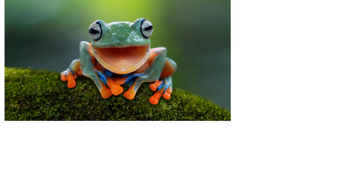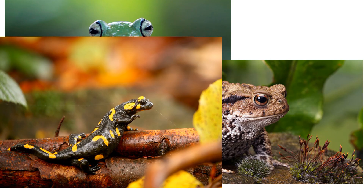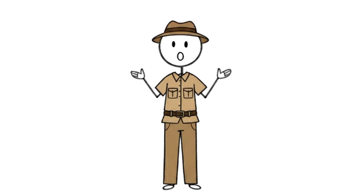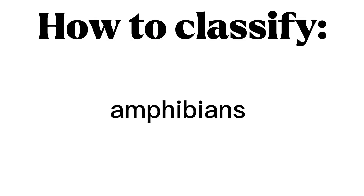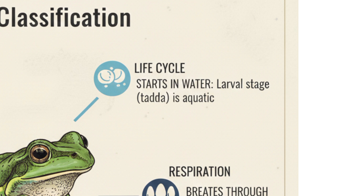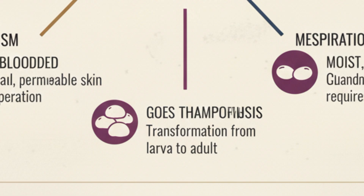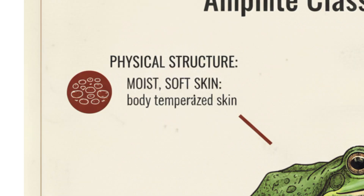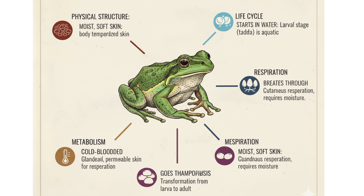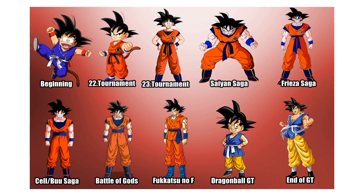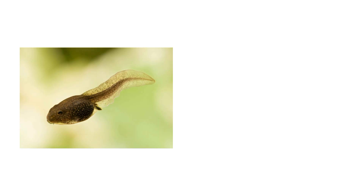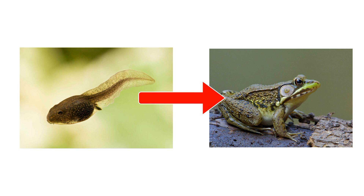Amphibians — frogs, toads, salamanders — the two-in-one combo animals. How to classify an amphibian: if an animal starts life in water, breathes through skin, goes through metamorphosis, and has moist soft skin — it's an amphibian. They literally evolve like anime characters. From tadpole to frog — new form unlocked.